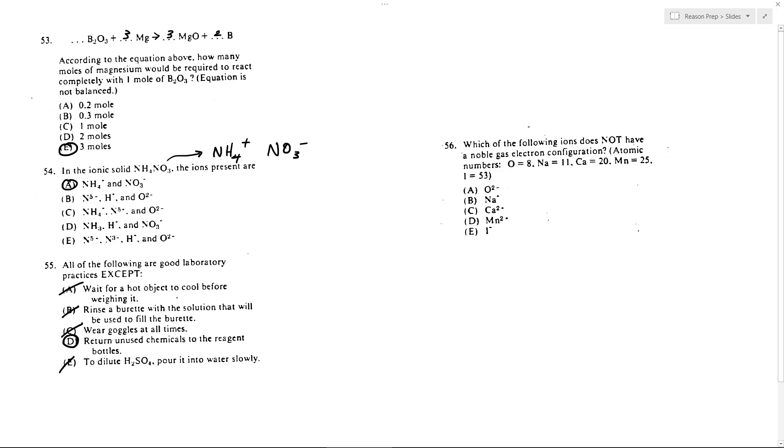We'll just write its valence shell. It's 2s2, 2p4. Add two electrons to make it minus two, you'll get 2s2, 2p6, which is a noble gas configuration.